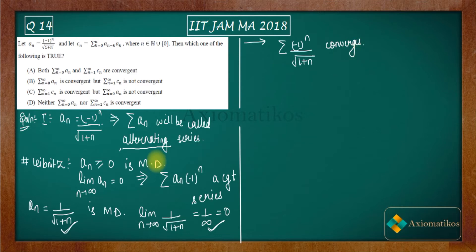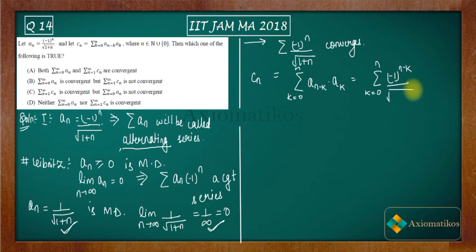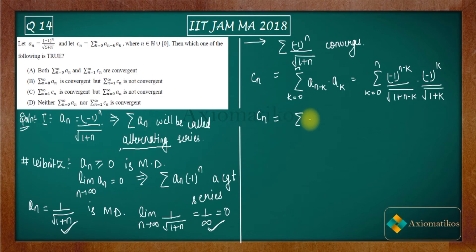Now we have to check the convergence of the series for cₙ. The sequence cₙ is defined as cₙ = Σₖ₌₀ⁿ a(n−k) · aₖ. According to the definition of aₙ, we have a(n−k) = (−1)^(n−k) / √(1+n−k) and aₖ = (−1)ᵏ / √(1+k). So cₙ = Σₖ₌₀ⁿ (−1)ⁿ / √((1+n−k)(1+k)).